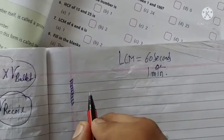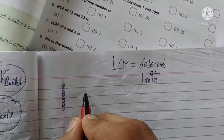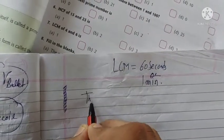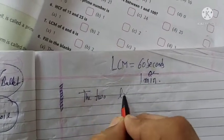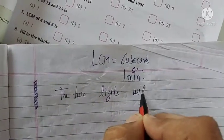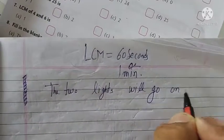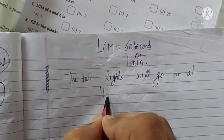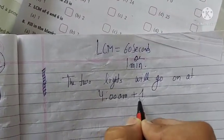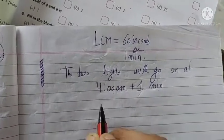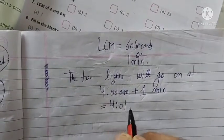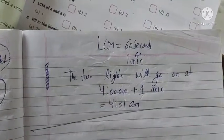So if the two lights both go on at 4 AM, they will go on together again at 4 AM plus 1 minute, which is 4:01 AM. So this is the answer.